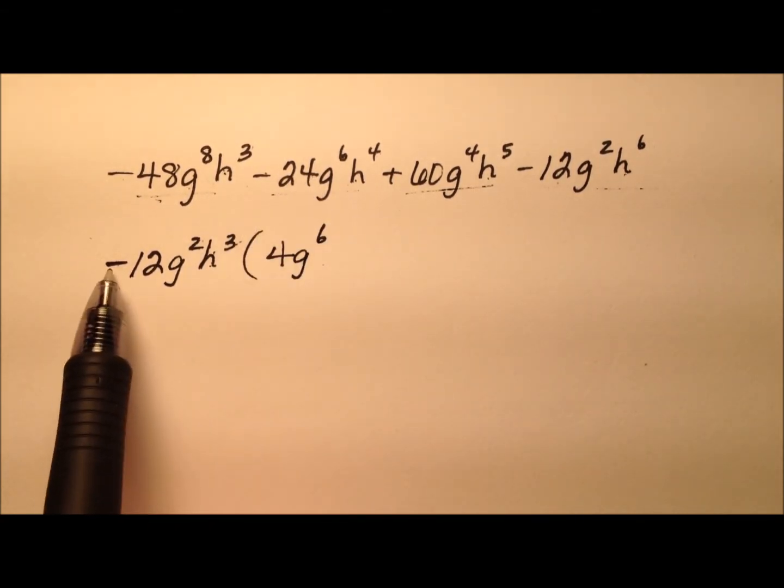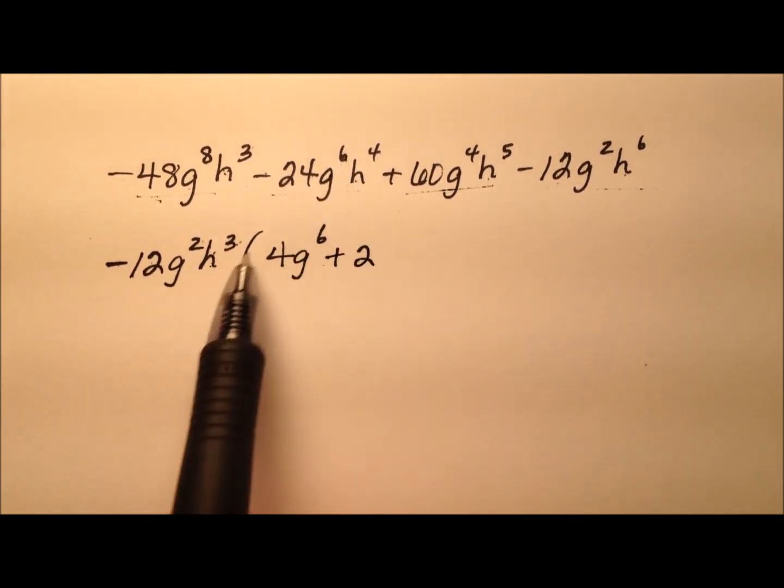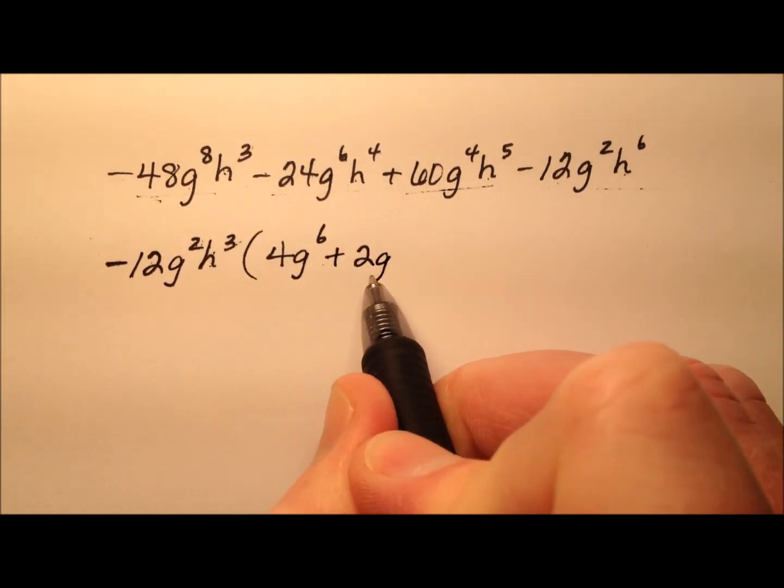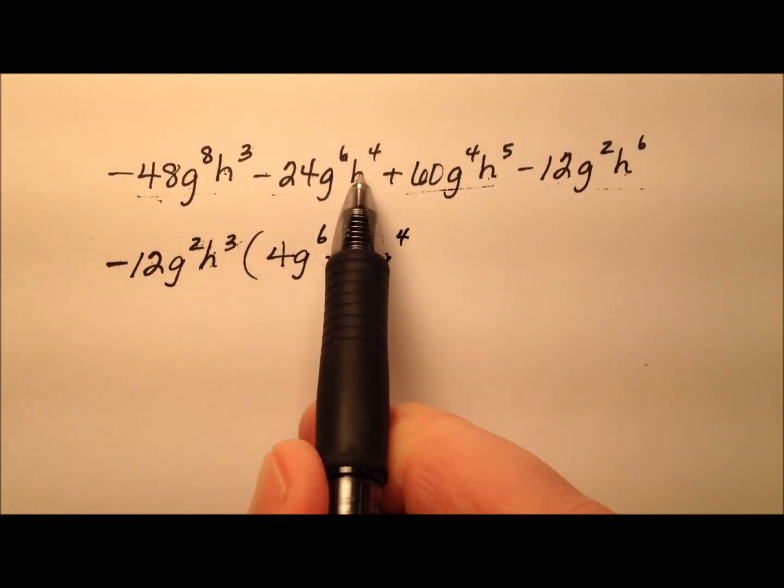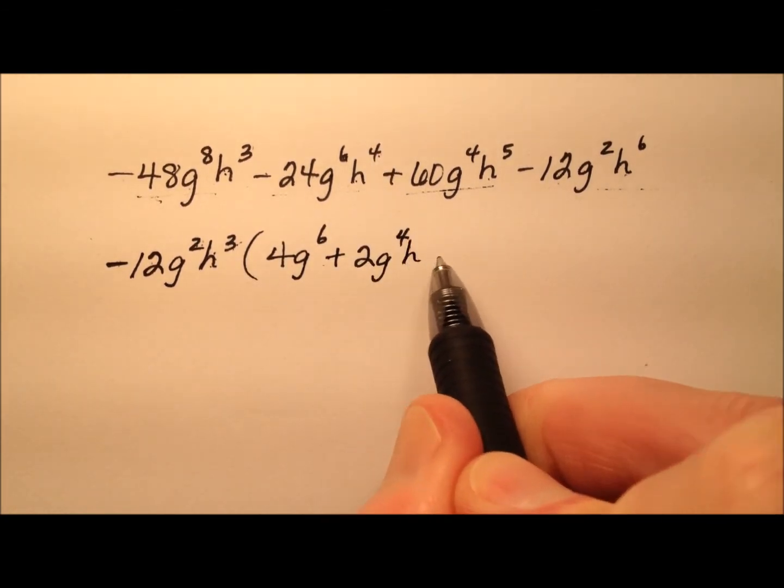Negative 24 divided by negative 12 will be positive 2. G to the sixth divided by g squared, we subtract the exponents. 6 minus 2 is g to the fourth. h to the fourth divided by h cubed, 4 minus 3 is just 1, so h.